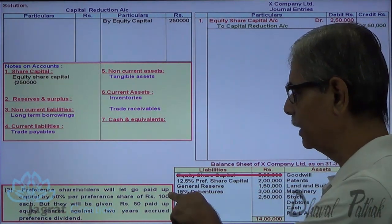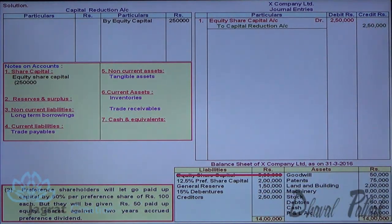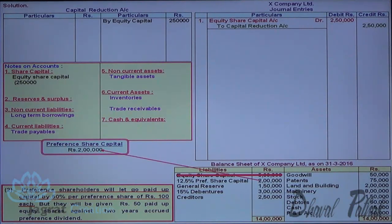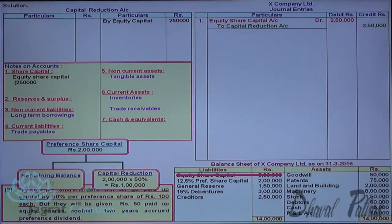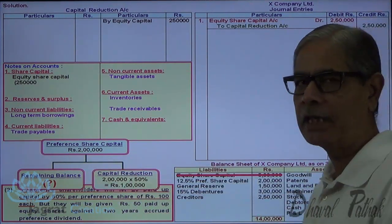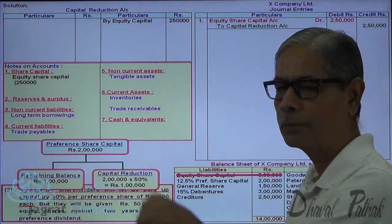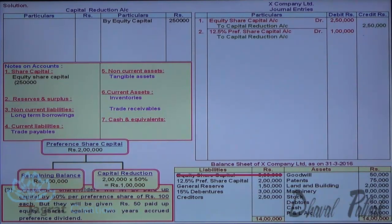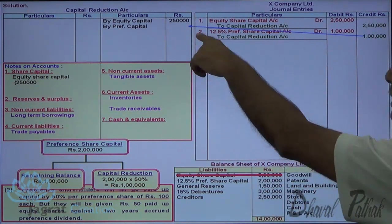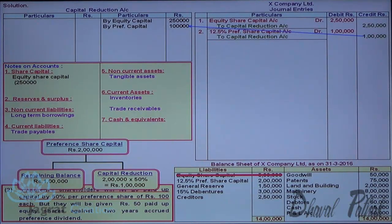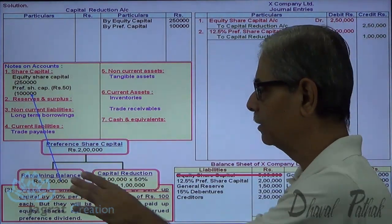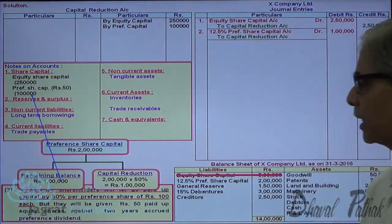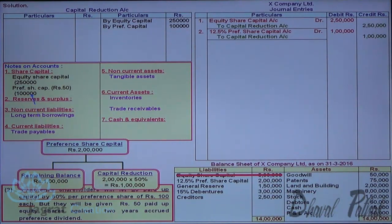Second point: preference shareholders will let go paid-up capital by 50%. Preference share capital is Rs. 2 lakhs; 50% reduction is Rs. 1 lakh; remaining preference share capital is Rs. 1 lakh. Journal entry: Preference Share Capital Account debit, to Capital Reduction Account credit, Rs. 1 lakh. The preference shares will appear in the balance sheet at Rs. 50 paid-up, Rs. 1 lakh. The second point is complete.